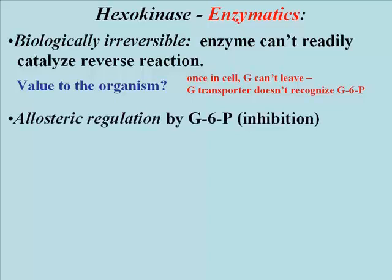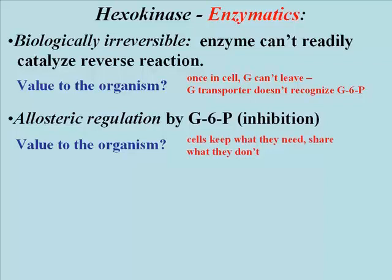Hexokinase is one of the allosterically regulated enzymes of the glycolytic pathway. Glucose 6-phosphate, the product of the catalyzed reaction itself, can bind to an allosteric site on the enzyme and block its catalytic action — in fact, blocking its own formation. Glucose 6-phosphate binding at this allosteric site causes the enzyme to change shape and be unable to bind glucose or ATP at its active site. When glucose is plentiful, say right after a meal, cells build up high concentrations of glucose 6-phosphate, which then inhibit its own synthesis. Thus the cells get the glucose they need, leaving the rest to circulate and be shared with other cells and tissues.